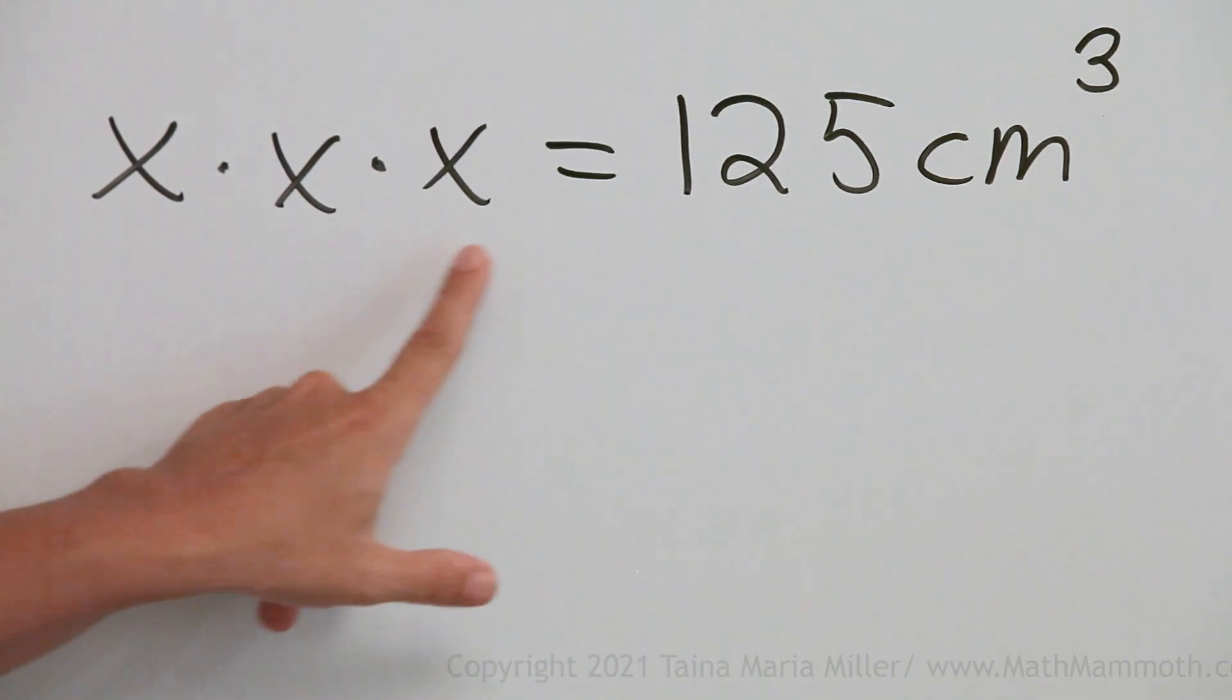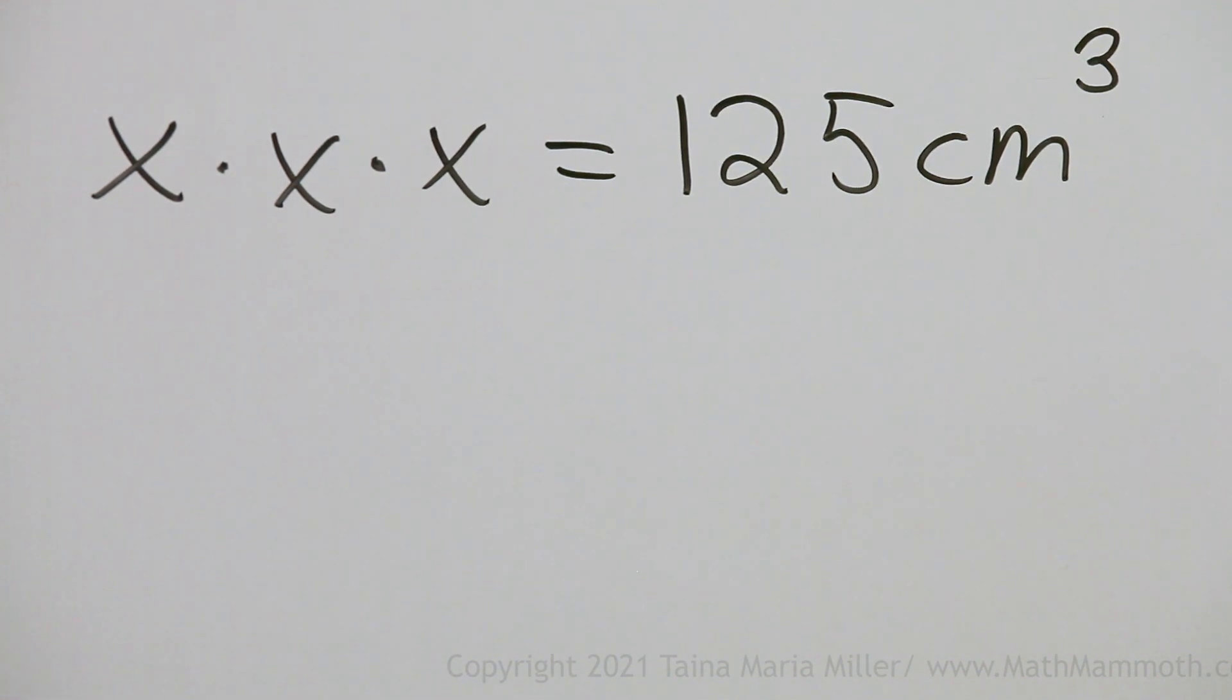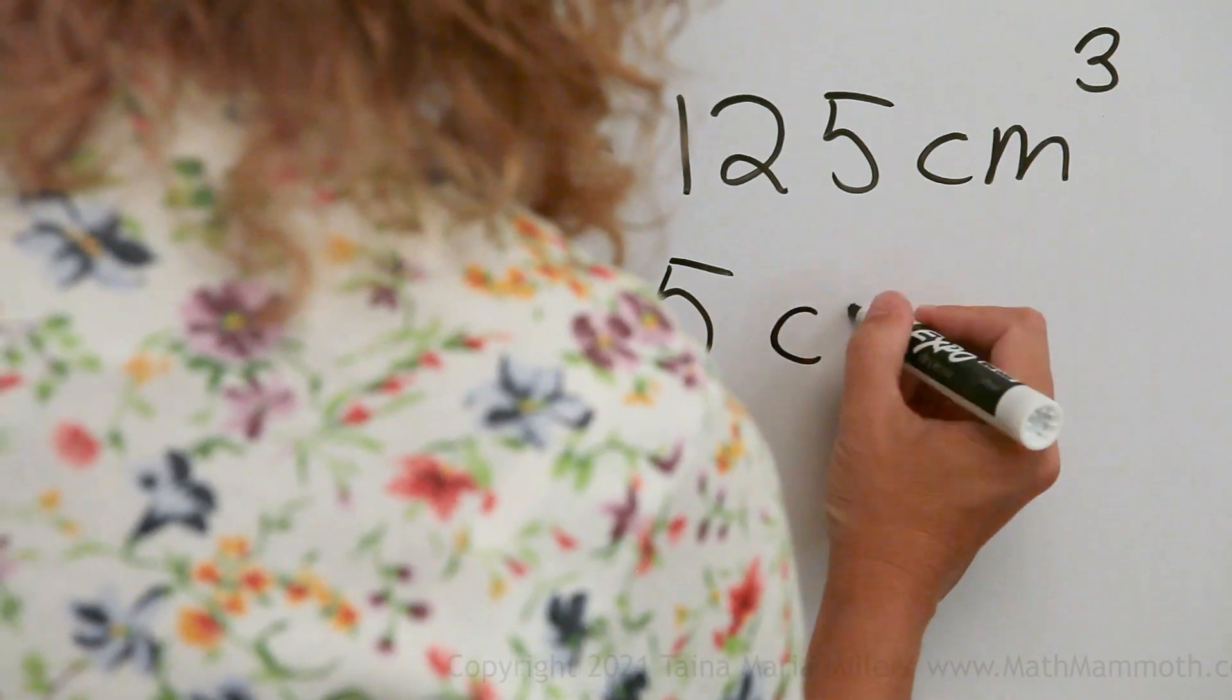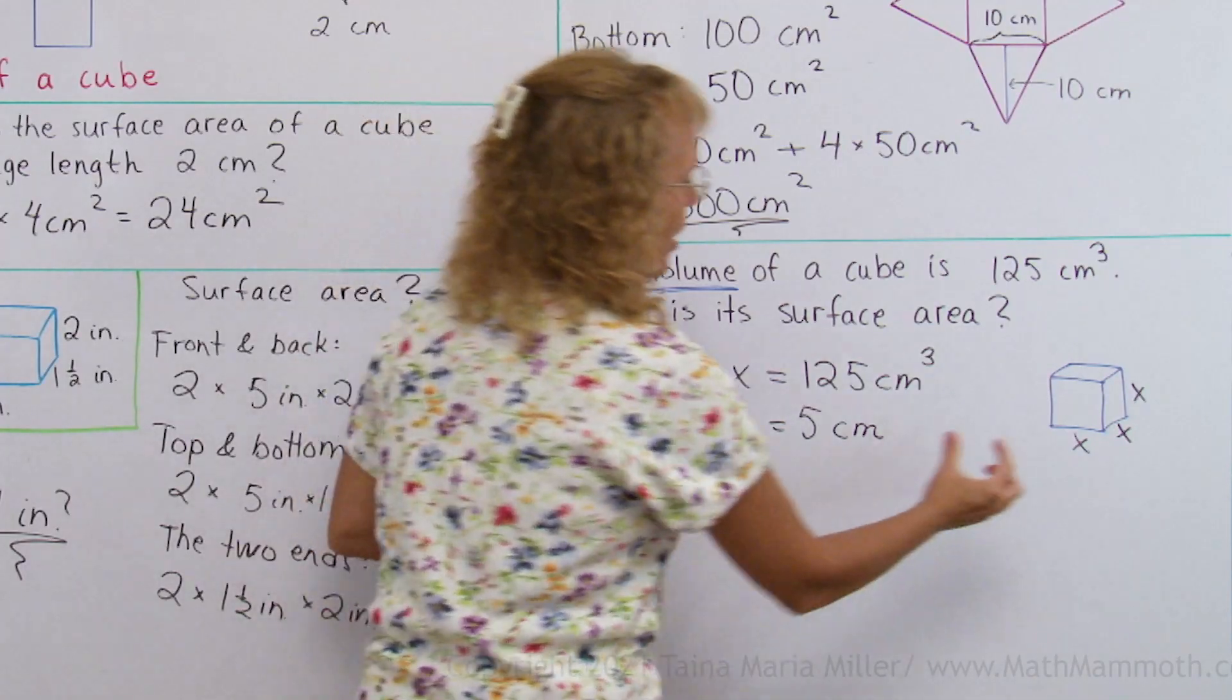5 times 5 times 5, 25 times 5, that works. So x equals 5 centimeters. That's the edge length for this cube.